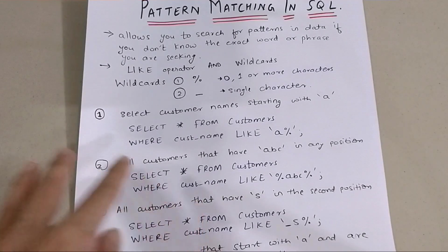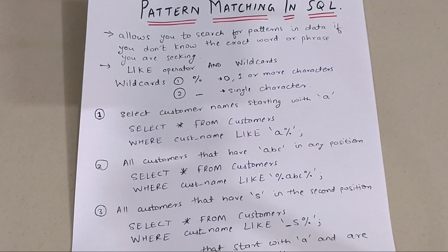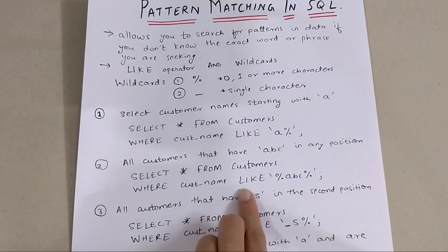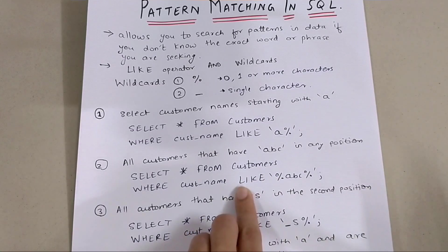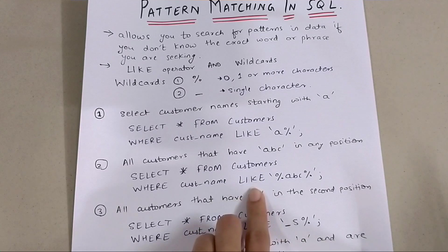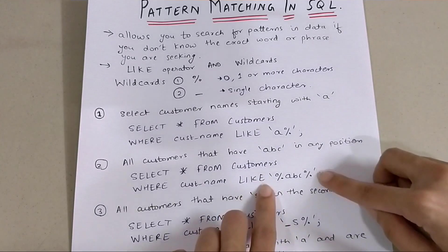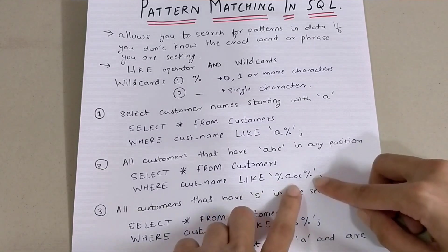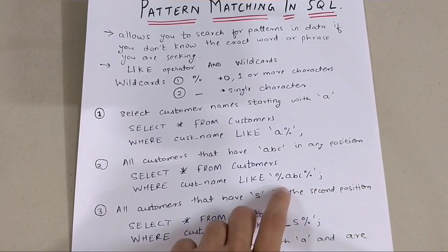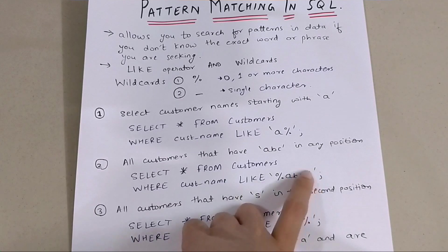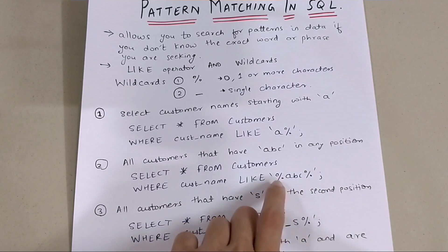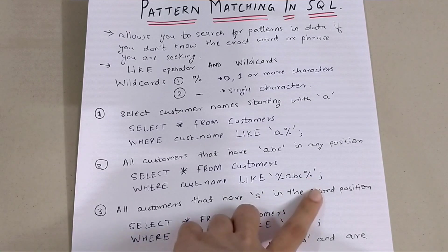The second question: all customer names that have 'abc' in any position. The query is SELECT * FROM customers WHERE customer_name LIKE '%abc%'. The percentage before abc means any number of characters can be before abc, and the percentage after means any number of characters can be after abc — including zero characters — so abc can appear anywhere in the name.